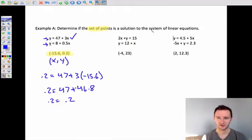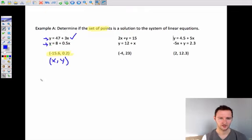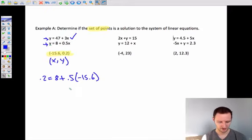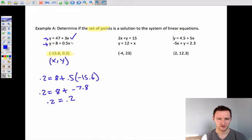To be a solution of the system, it has to satisfy both equations. So now we have to check this second one. I'm going to take 0.2 equals 8 plus 0.5 times negative 15.6, and I'm going to find 0.5 times negative 15.6. That's negative 7.8. 0.2 equals 8 plus negative 7.8. And it does. So this solution works for this equation as well. Since it works for both, yes, this is a solution.